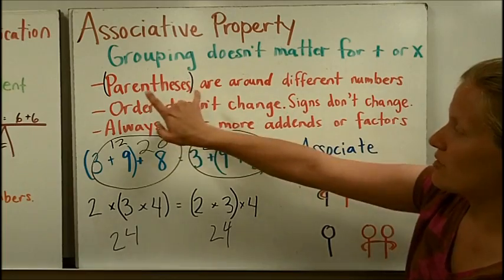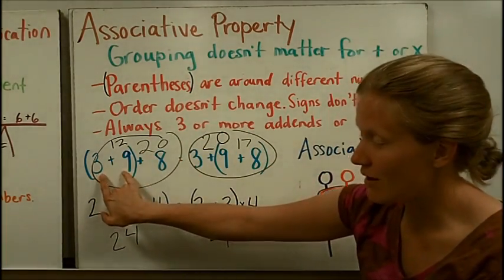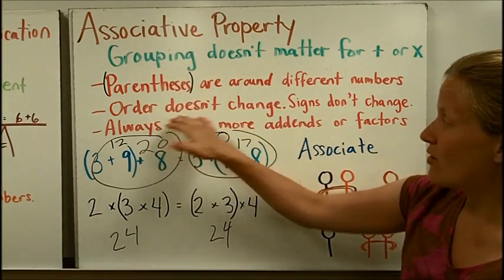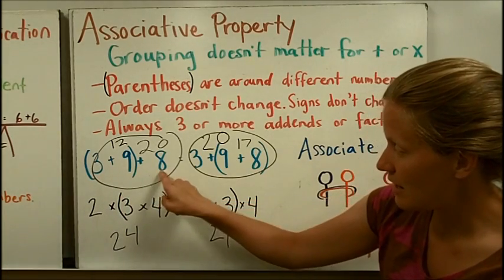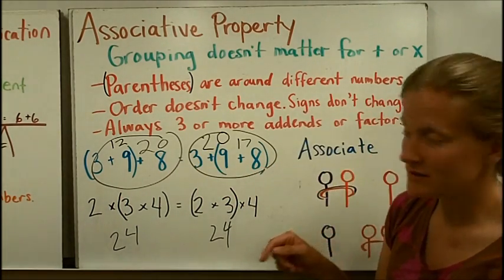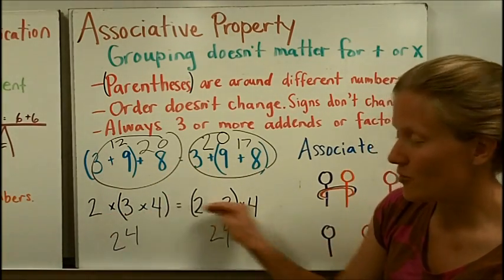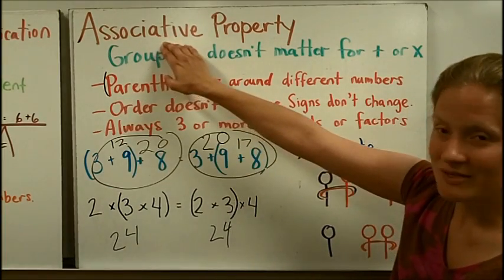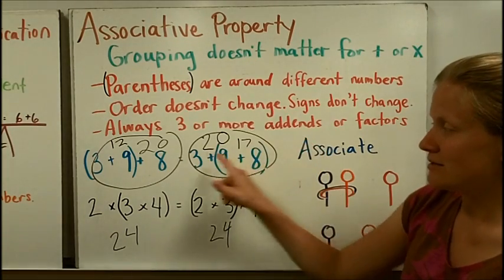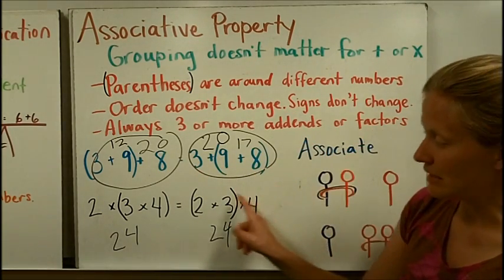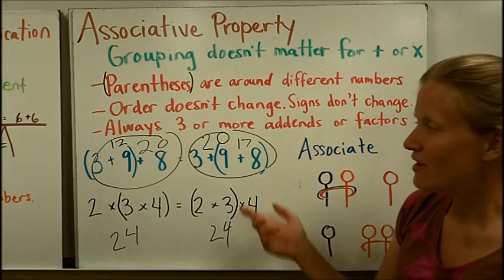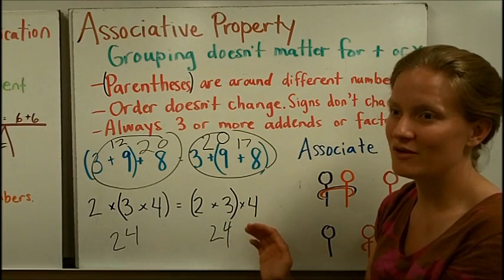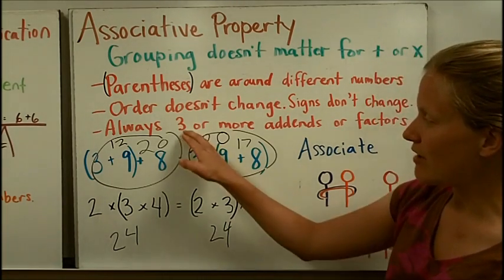A couple of rules about the associative property. The parentheses are around different numbers — here they're around 3 and 9, and here they're around 9 and 8. When demonstrating the associative property, the order of the numbers does not change: I have 3, 9, 8 on both sides. Neither do the signs — it must be all addition or all multiplication; this property does not work if you mix addition and multiplication within the same equation. Finally, you always have to have 3 or more addends or factors, because there would be no reason to use parentheses with just 2 numbers.